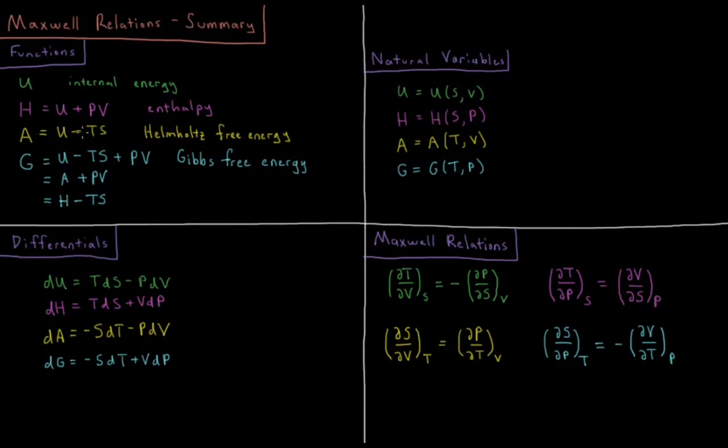defined as U minus temperature times entropy; and we have the Gibbs free energy, G, defined as U minus TS plus PV, which is also equal to A plus PV, and also equal to H minus TS.